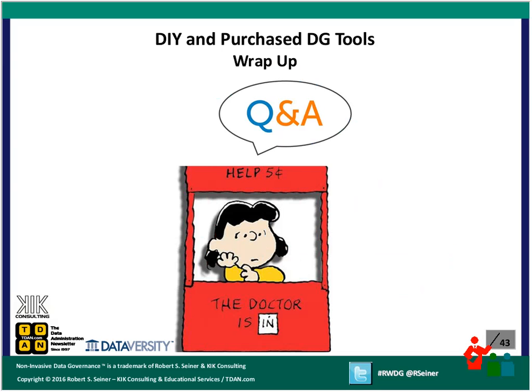There are lots of comments coming in but no questions. If you have any questions for Bob, submit them in the Q&A. The most common question we always receive is whether people will receive a copy of the slides. For this webinar, I'll be sending a follow-up email to all registrants by end of day Monday with links to the slides, the recording, and all the matrices Bob mentioned today. Other than that, people are being pretty quiet today — it's a stormy Thursday.